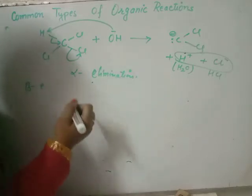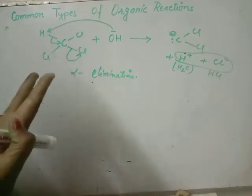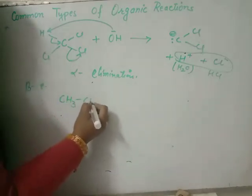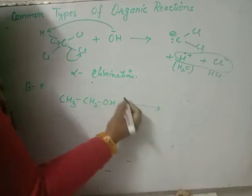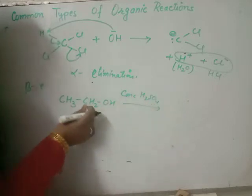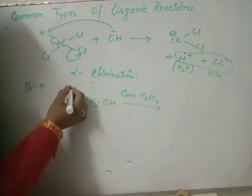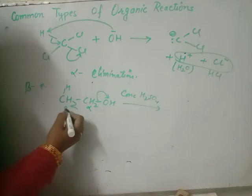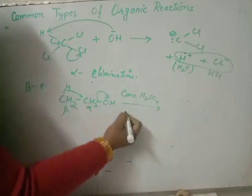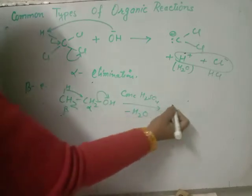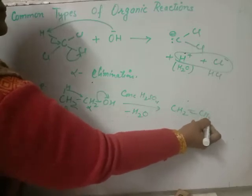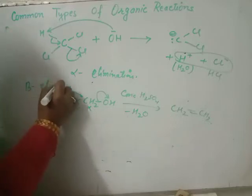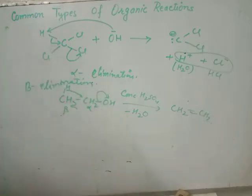Now, beta elimination. Beta elimination means the hydrogen of the molecule is removed from the second (beta) carbon relative to the functional group. For example, when ethanol is treated with concentrated sulfuric acid, the OH is removed from the alpha carbon and the hydrogen from the beta carbon is also removed, releasing water (H⁺ and OH⁻), leaving behind an alkene. This is known as beta elimination reaction.